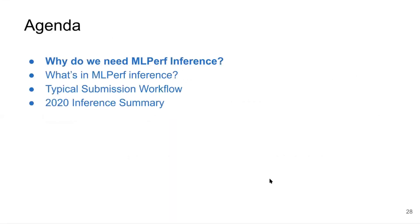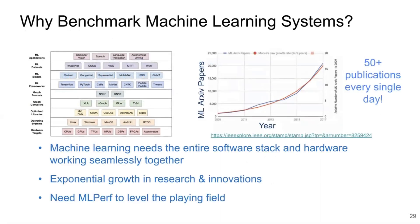First I want to talk about why we need MLPerf inference. There's a variety of software stacks you can use, from very high-level ML applications all the way down to low-level libraries and compilers. All these components at different layers influence the performance of the ML system. We also have a lot of ML publications being published every year, and there should be a way to meaningfully measure innovations and provide a neutral way to compare system performance.